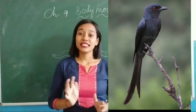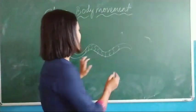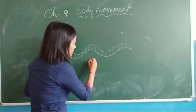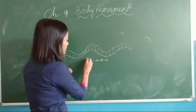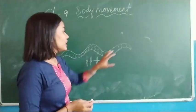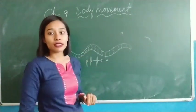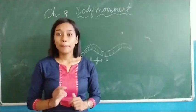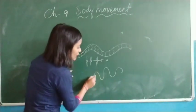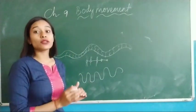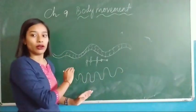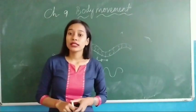Now we will discuss movement in snakes. Snakes have a long, slender body and a flexible skeleton. Muscles are connected to this skeleton which helps them to move freely. They have a layer of scales over their body which helps them to move fast. Snakes move by crawling on their bellies. When they need to move faster, they form a loop-like structure — each loop pushes them forward. This type of movement is called slithering.